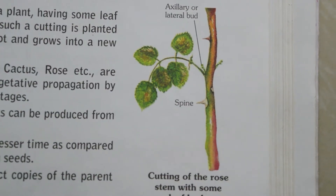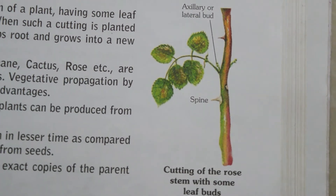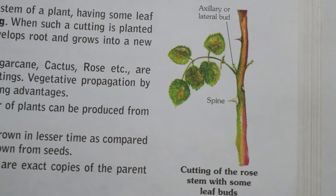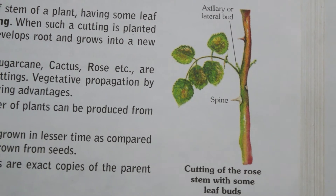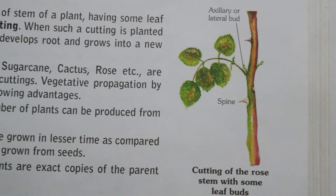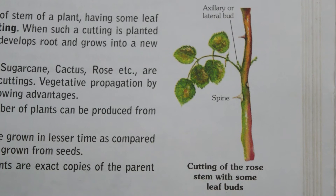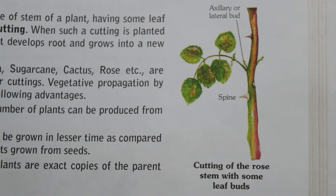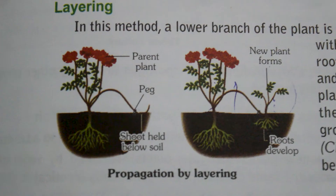Next we will learn about artificial methods of vegetative propagation. The first method is cutting. In this method, a small piece of stem from a plant having leaf buds is cut and placed in moist soil, so that it develops roots and grows into a new plant. A large number of plants can be produced from one plant within a very short span of time, and the new plants are exact copies of the parent plant.